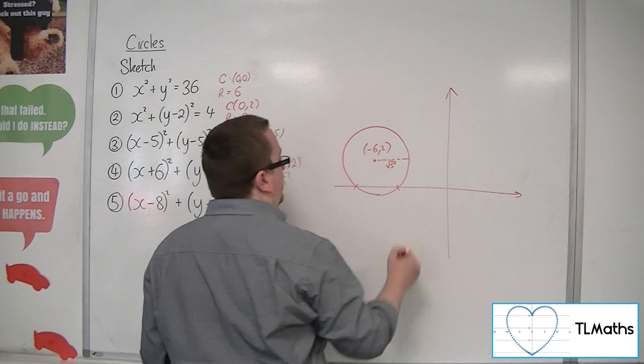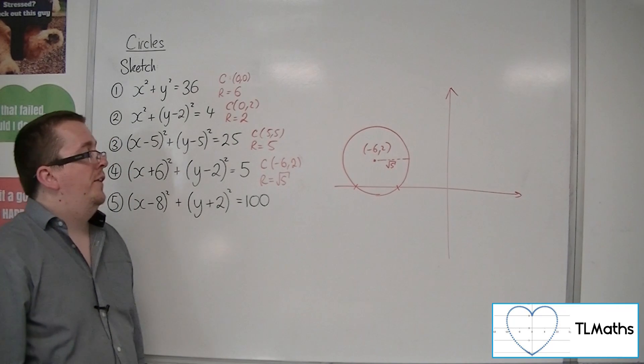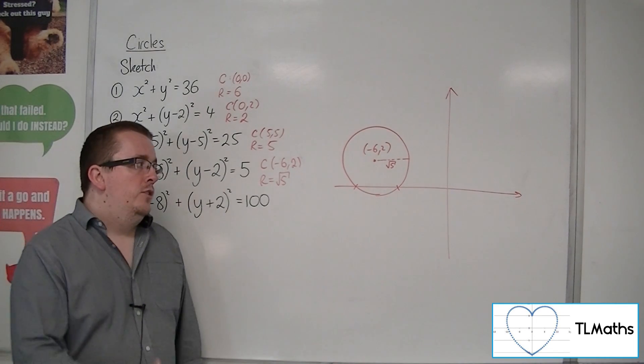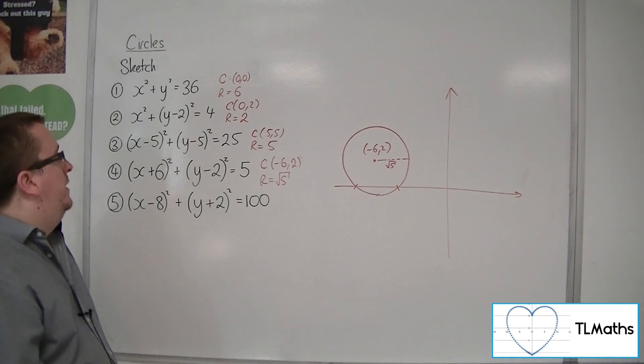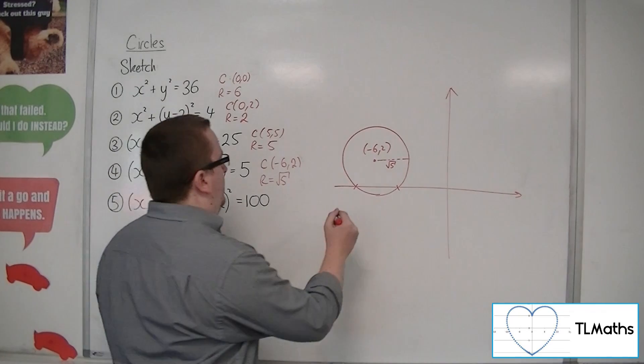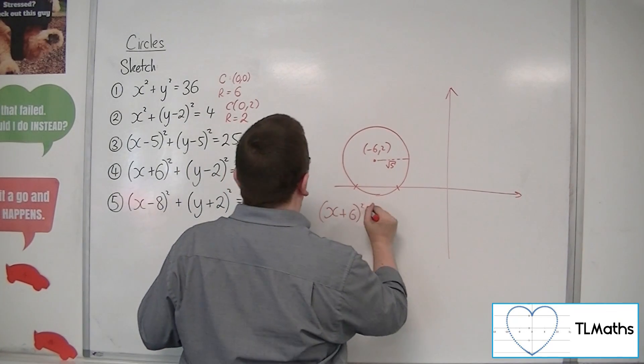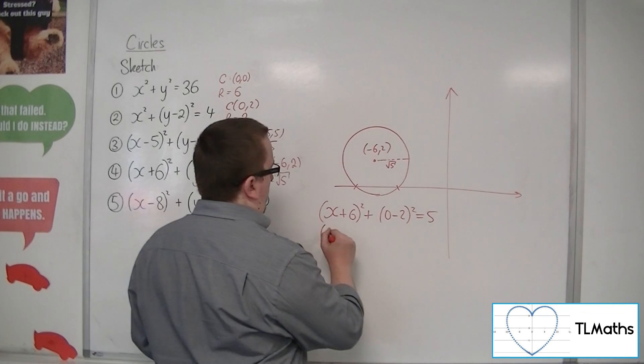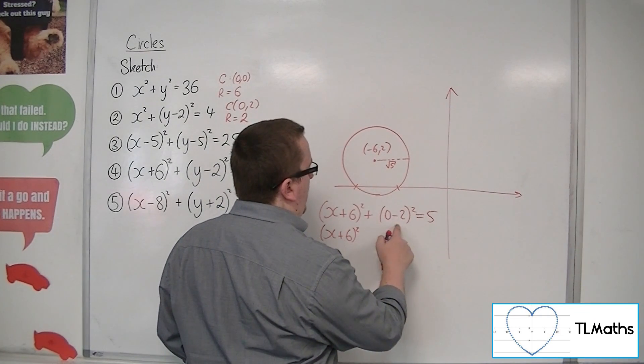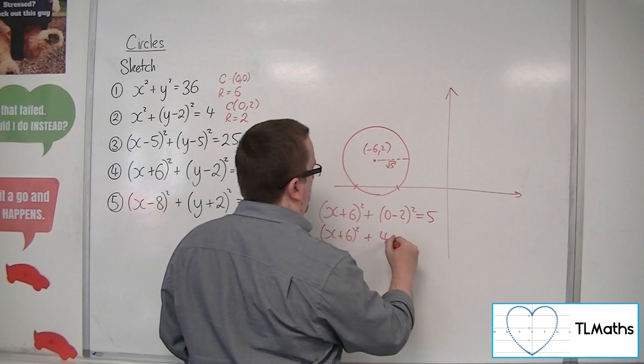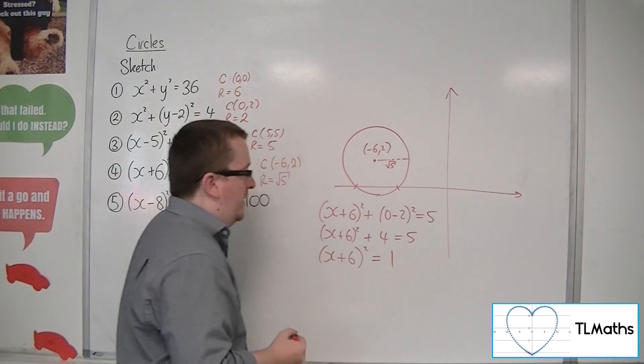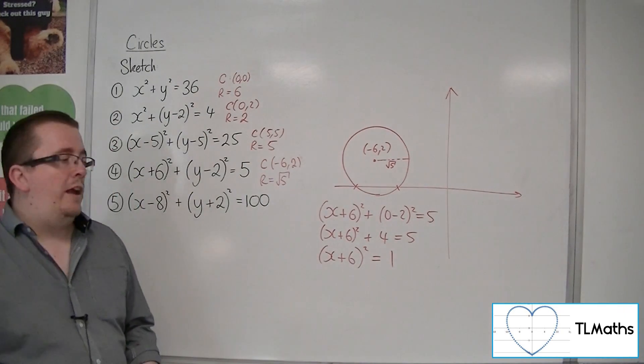Now, because it's crossing the x-axis, it makes sense that I work out where it is crossing the x-axis, what the coordinates of those points are. So, just in the same way as we would sketch other curves and lines, in order to find out where it crosses the x-axis, we substitute in y equals 0. So, x plus 6 squared plus 0 minus 2 squared equals 5. So, x plus 6 squared, that's going to be 4. So, plus 4 equals 5. And then take the 4 to the other side. This is much easier than multiplying out that x plus 6 bracket.